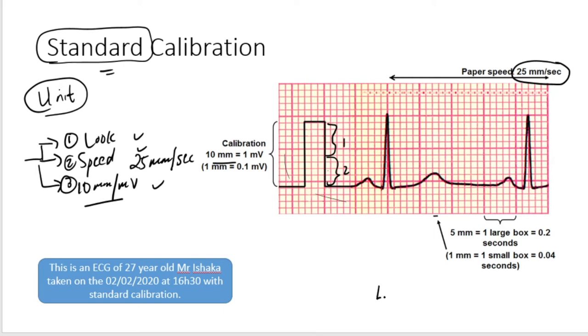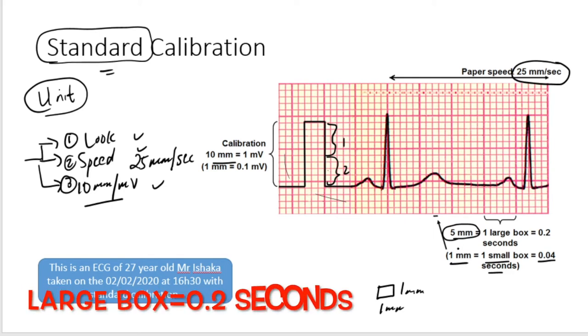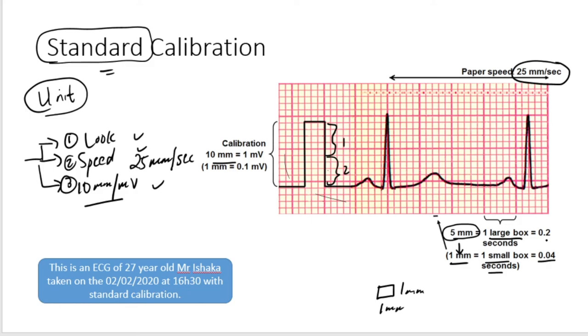I also just want to highlight that the small box is one millimeter by one millimeter. So one millimeter is equal to one small box, which is also equal to 0.04 seconds. These are just basics that you need to know. Then a large big box has five small boxes, and one small box is one millimeter, so it's five millimeters. So one large box is equal to 0.2 seconds.